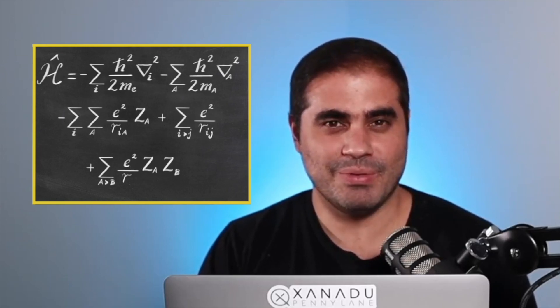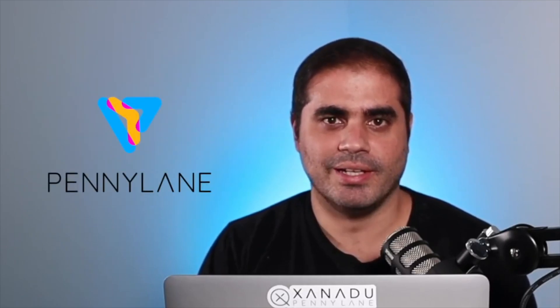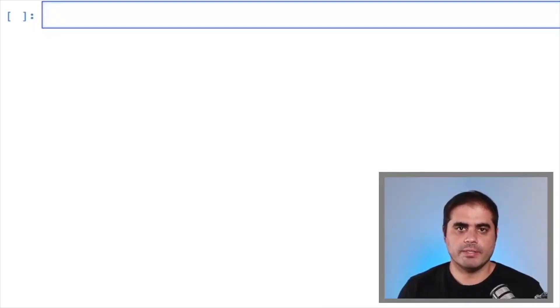The Hamiltonian, even with the Hartree-Fock approximation, can be complicated to calculate, but I have good news for you. PennyLane can do this for us. Let's see how. Okay, so let's get started. So let's start by importing PennyLane as always. So import PennyLane as QML.